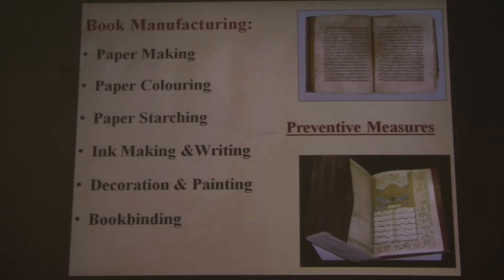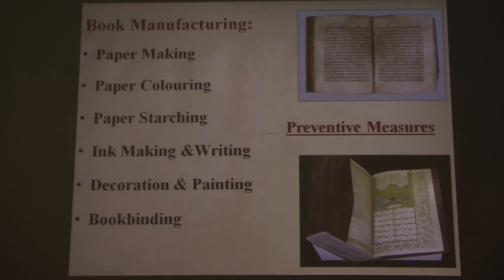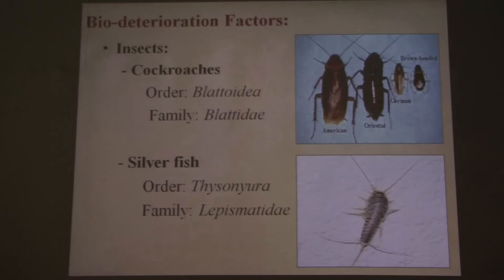Depending on our talk last week about looking at the whole picture or the whole process of book manufacturing, at each stage the craftsmen or artists used some preventive measures to protect their final objects like a manuscript or a book. The meaning of bio-deterioration factors is mainly about three main factors: insects, fungi, and bacteria. All these three elements affect papers.